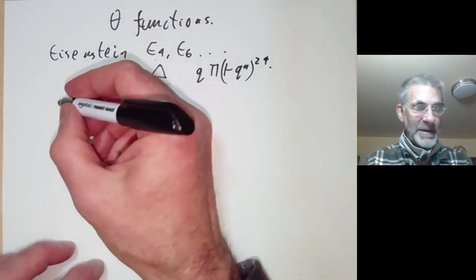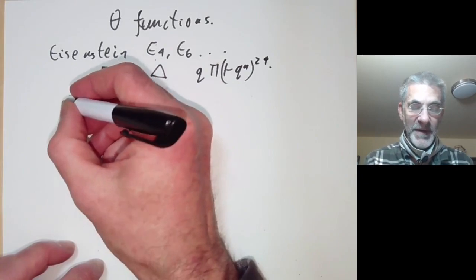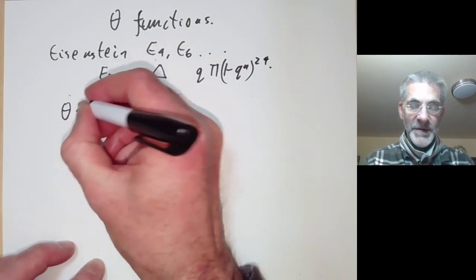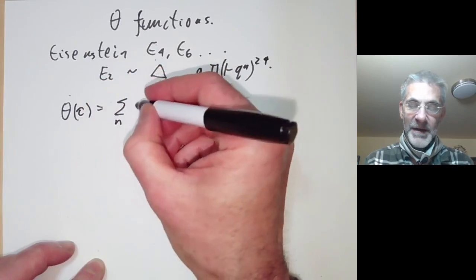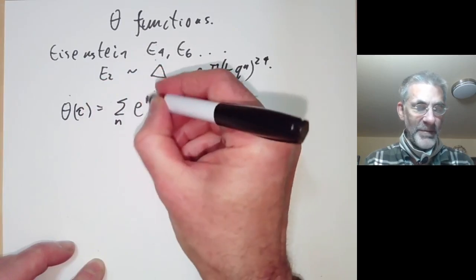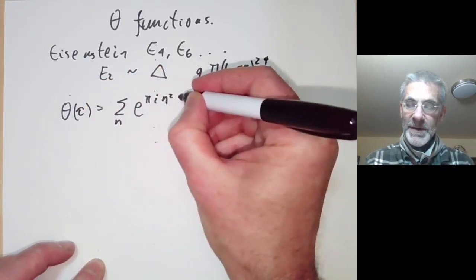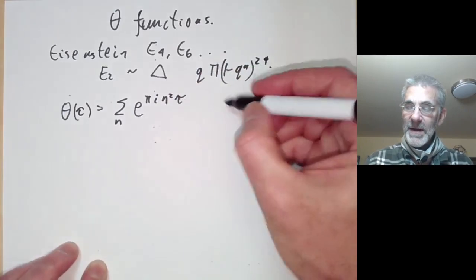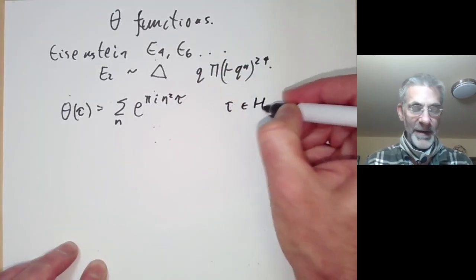Let's give the simplest example of a theta function. This would be the theta function of tau, which is the sum over all integers n of e to the pi i n squared tau, where tau is in the upper half plane.